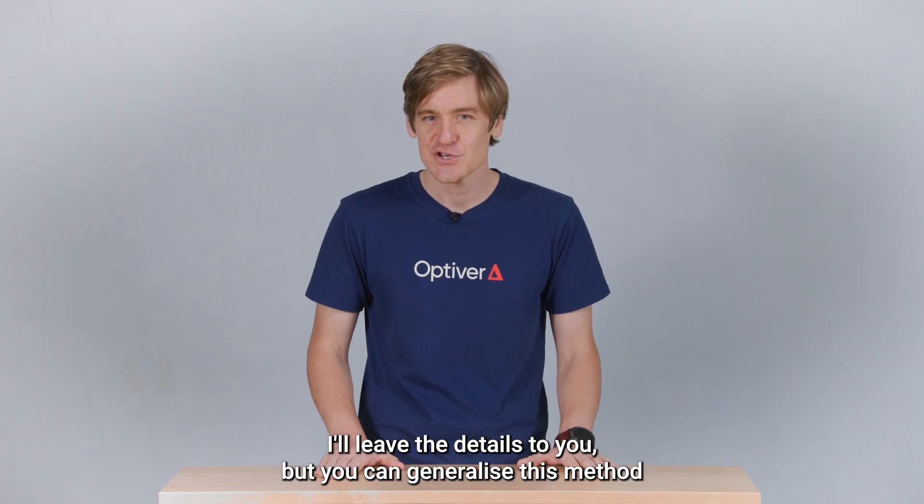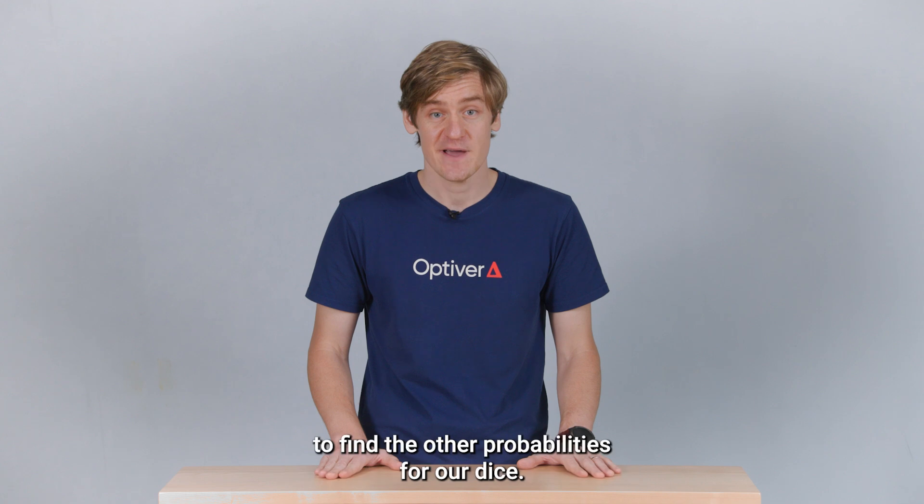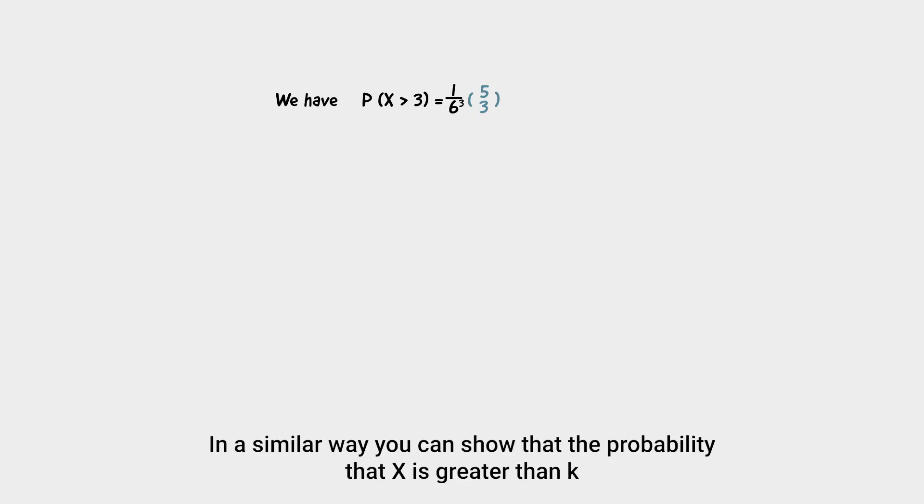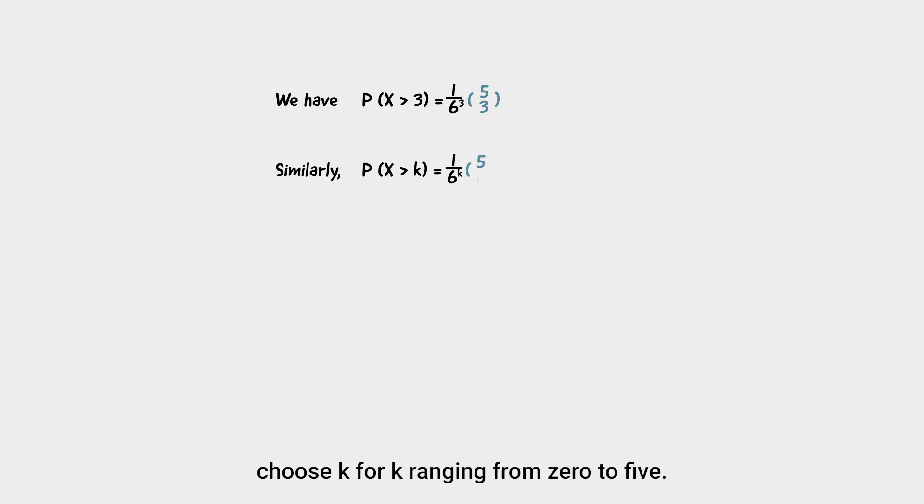I'll leave the details to you, but you can generalize this method to find the other probabilities for our dice. In a similar way, you can show that the probability that x is greater than k is equal to one over six to the k, times five choose k, for k ranging from zero to five.